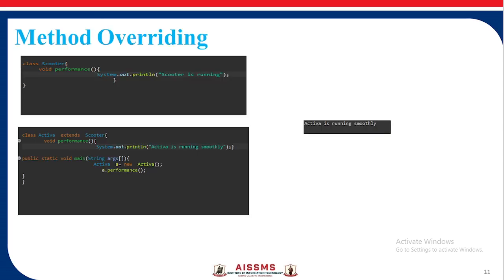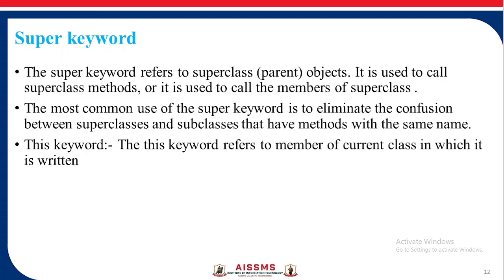Consider this example. Class `Scooter` has a method `performance` with the statement 'scooter is running'. Class `Activa` extends class `Scooter` and the method `performance` here has the statement 'Activa is running smoothly'. When we create the object of Activa class as A and call `A.performance`, we get the output 'Activa is running smoothly'.